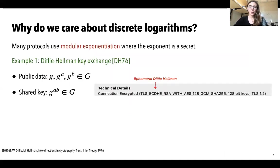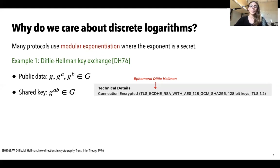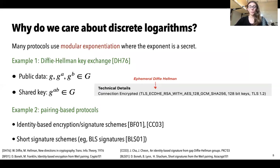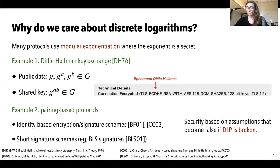Why do we care about discrete logarithms? Many cryptographic protocols use modular exponentiation, where the exponent is a secret — for example, computing G to the X in a group G. This is the case in the Diffie-Hellman key exchange protocol, where as public data we have a generator G, G to the A, G to the B, and a shared secret key G to the AB. If it is easy to recover either A or B from the public data by solving a discrete logarithm, then one can compute G to the AB. Pairing-based protocols such as identity-based encryption, signature schemes, and short signature schemes also have security based on assumptions that would fail if the discrete logarithm problem is broken.